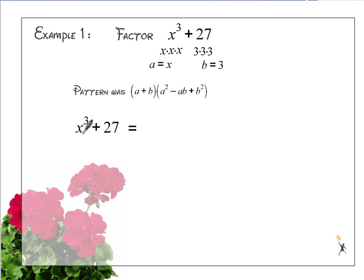So I'm going to start with x, and then I'm going to add it to the cube root of my second term, which was just 3. In my second set of parentheses, my second factor, I'm going to square our x term.